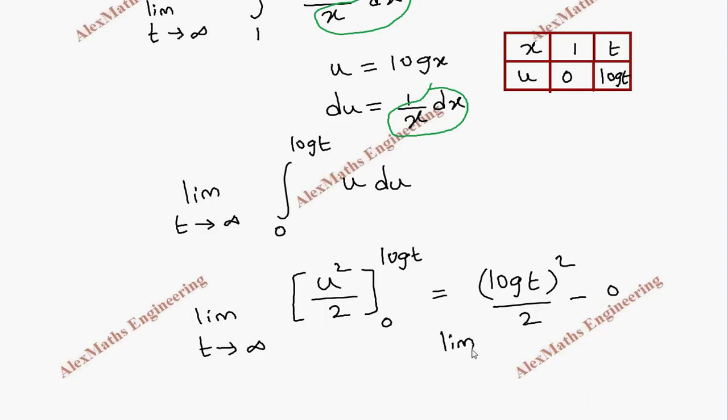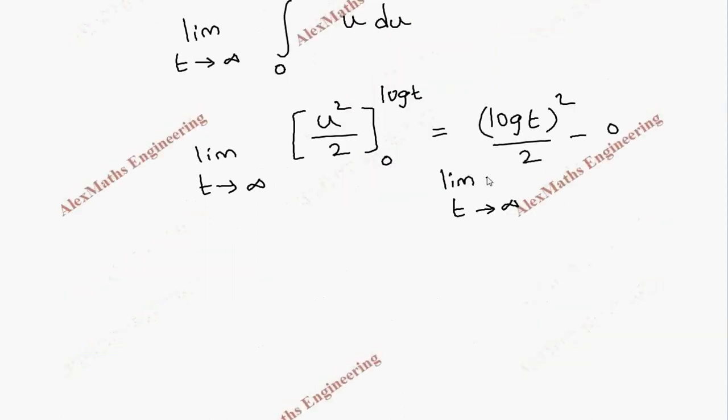And still we have limit t tends to infinity. When I substitute infinity we get log infinity whole square divided by 2 minus 0, which gives infinity. So it is divergent.